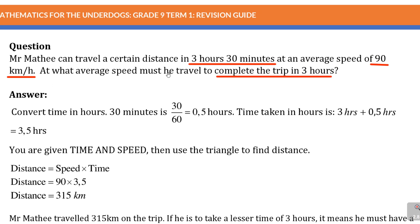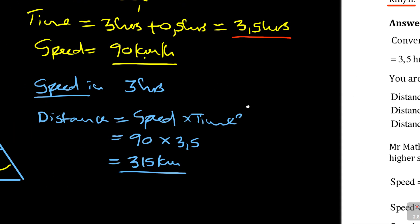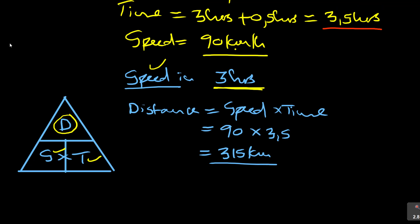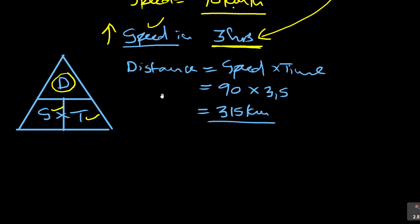Then they are saying, at what average speed must he travel to complete three hours? So Mr. Mati now wants to travel the same distance of 315, but now he wants to take a lesser time, three hours. In the beginning, he took three and a half hours, which is more. Now you move from three and a half hours to three hours, your time is reduced. When you're reducing your time, it means you must now travel at a higher speed.